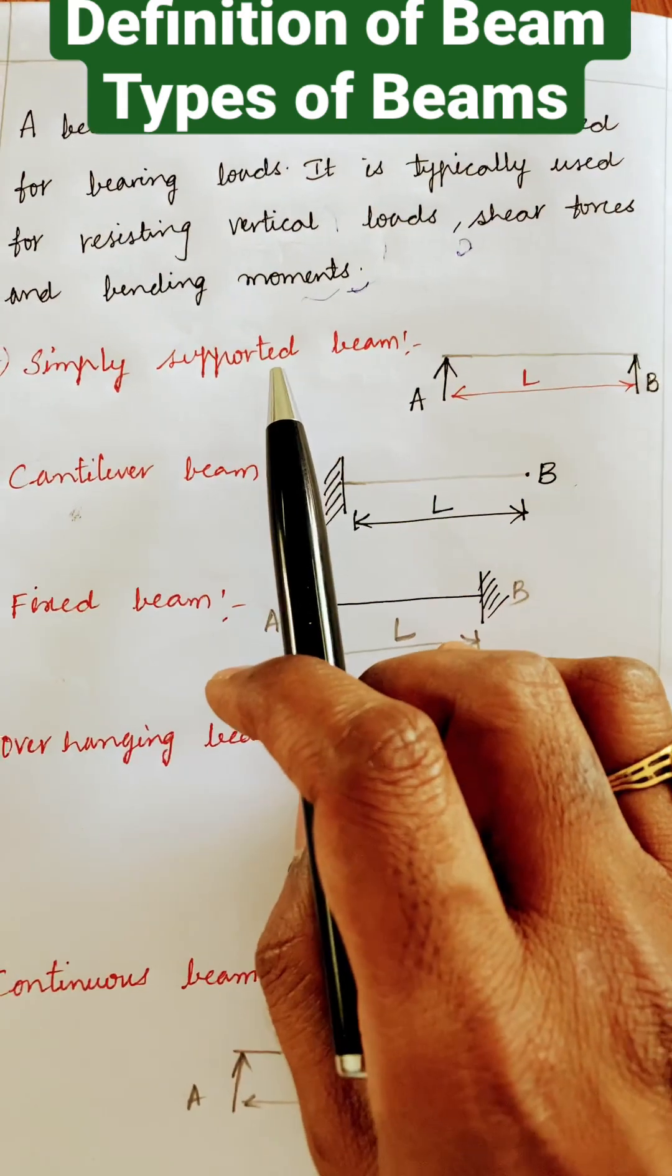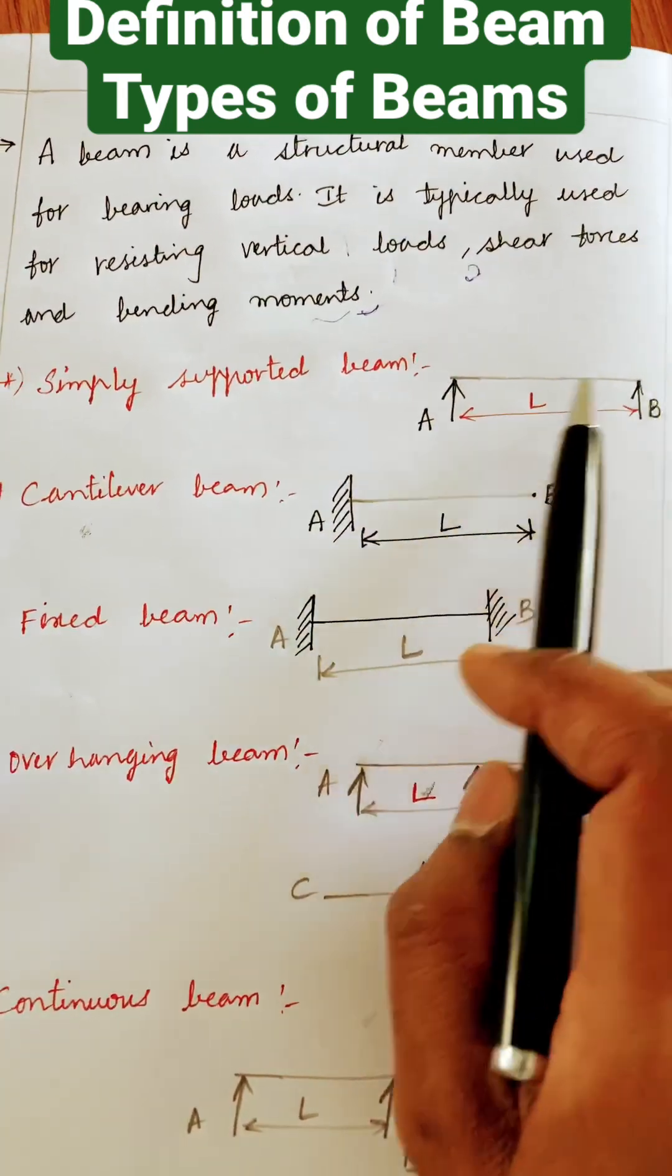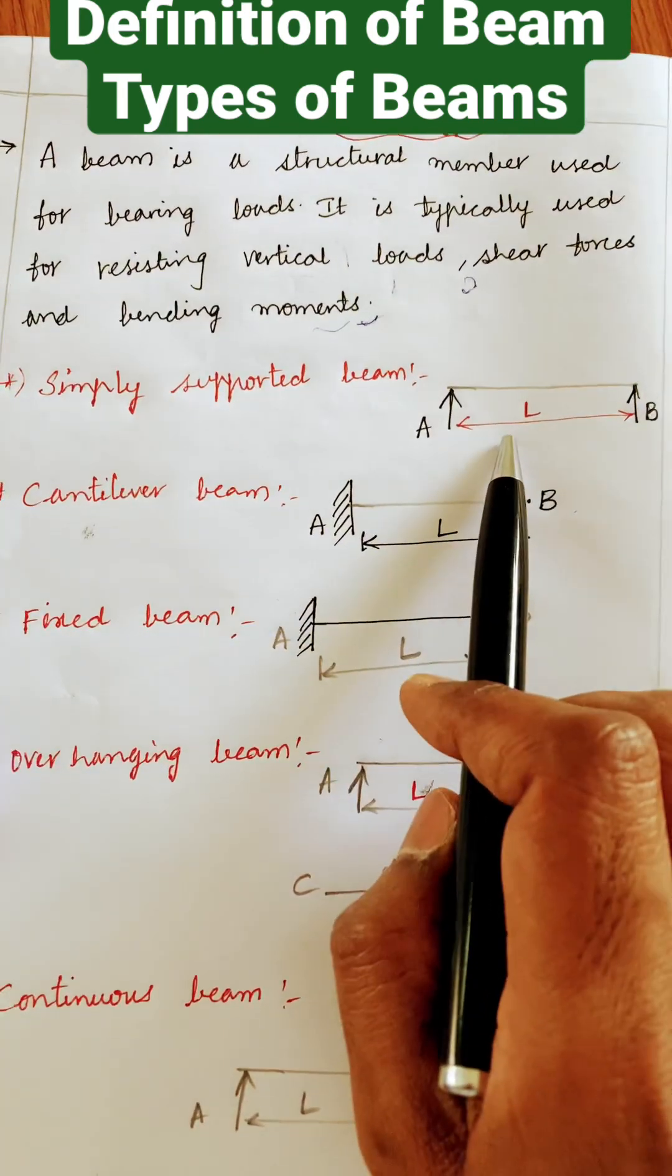What are the different types they may be asking in the exam? Simply supported beam. It rests on two supports of a beam like AB and with a length L.